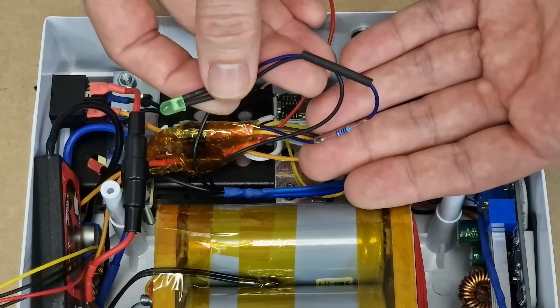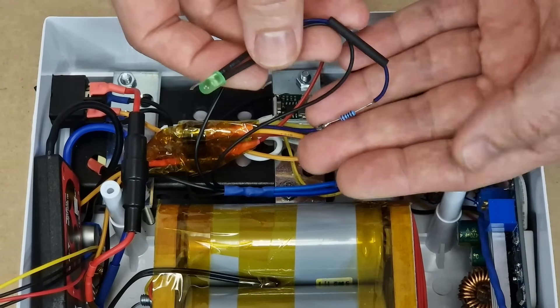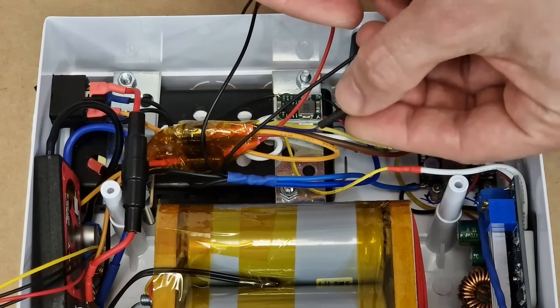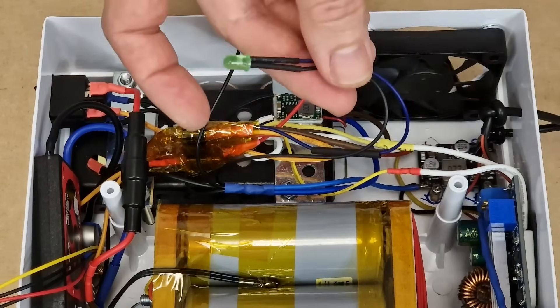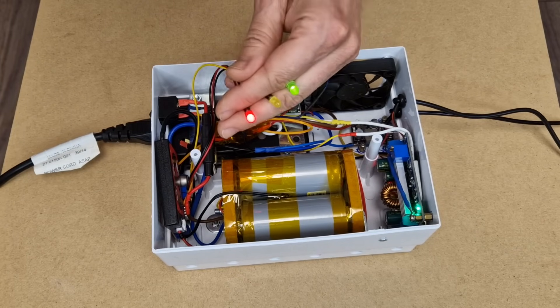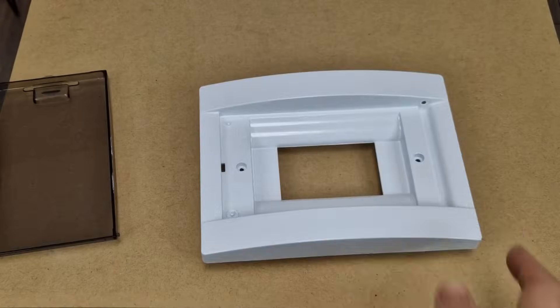The green LED indicates when mains power is present. It's connected directly on the charger output, in series with a 2.2kohm resistor. The LEDs work, but I need the panel to mount them on. I will modify the fuse box panel.